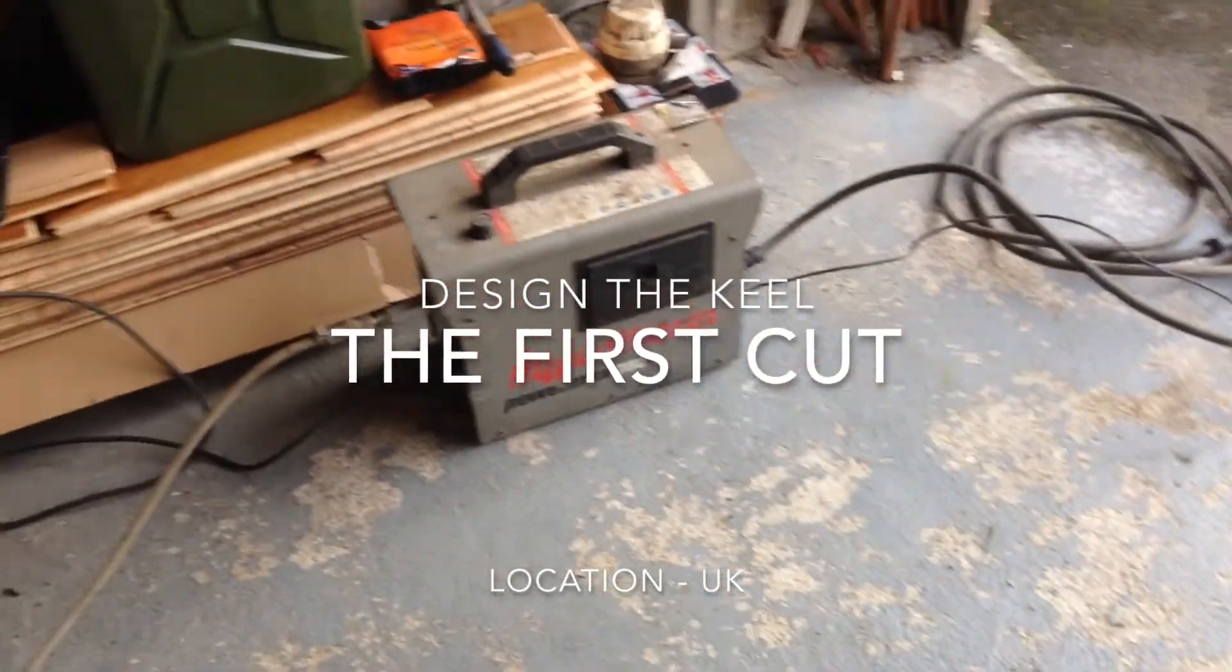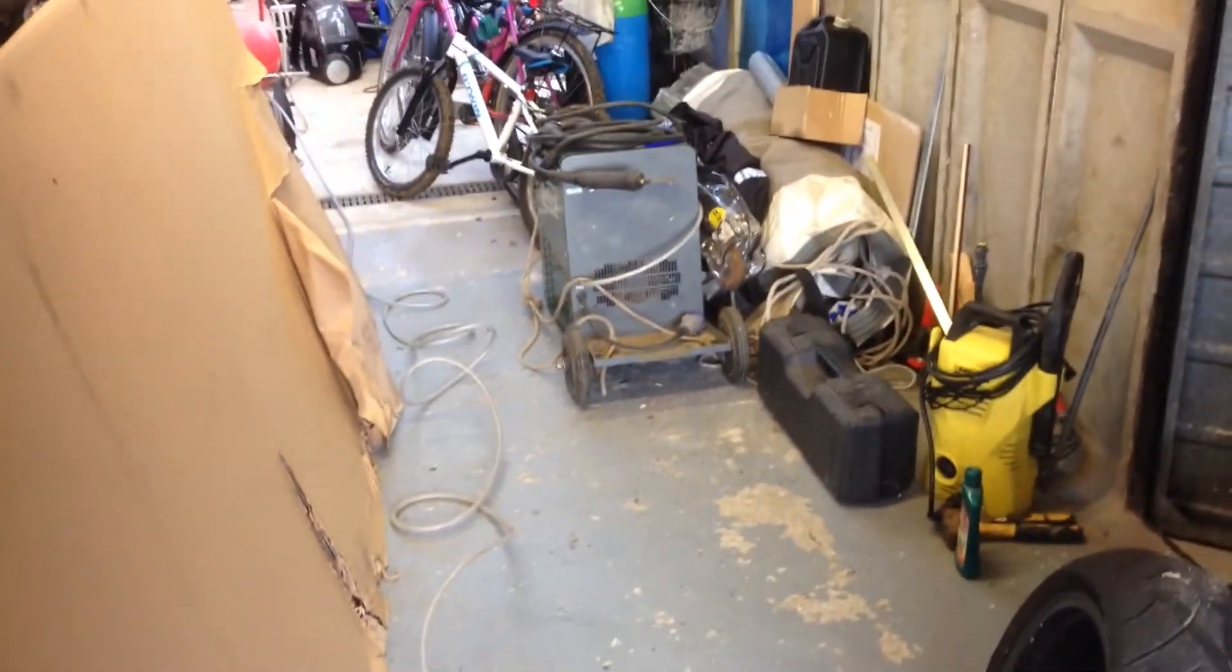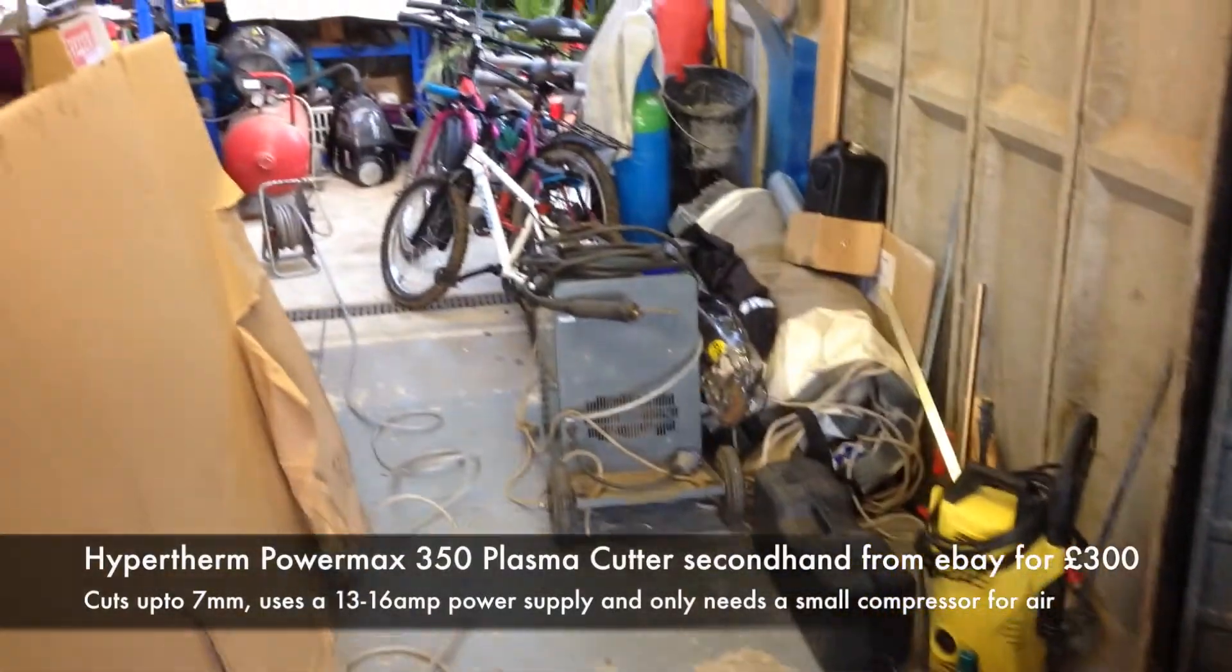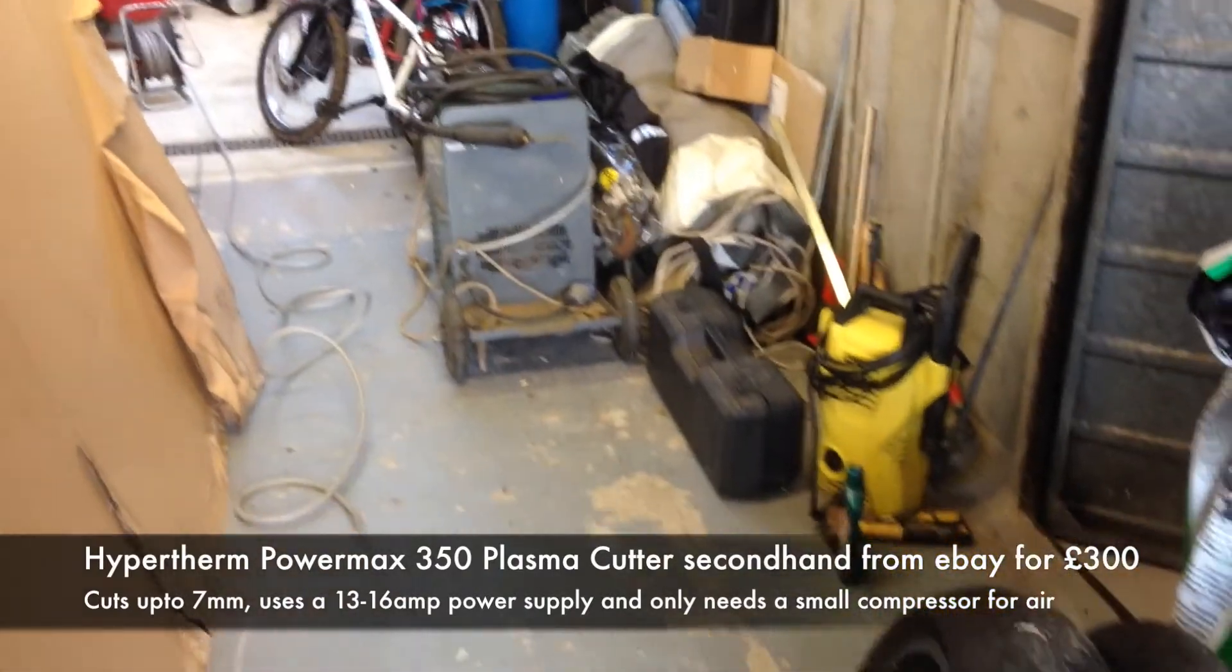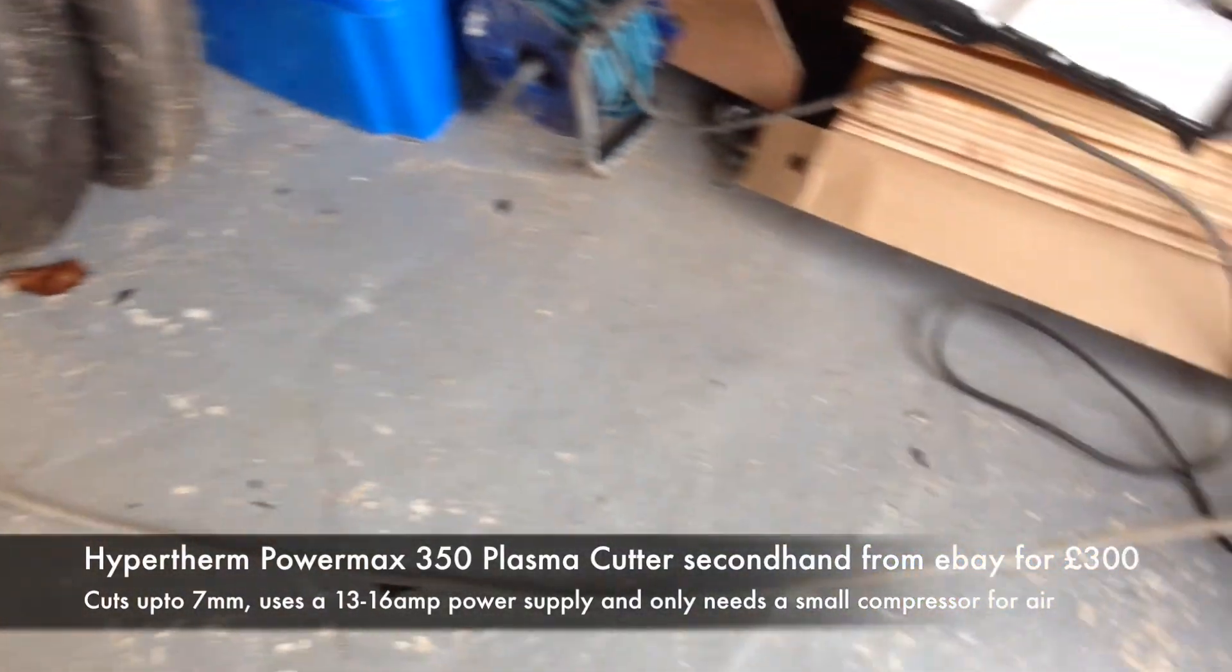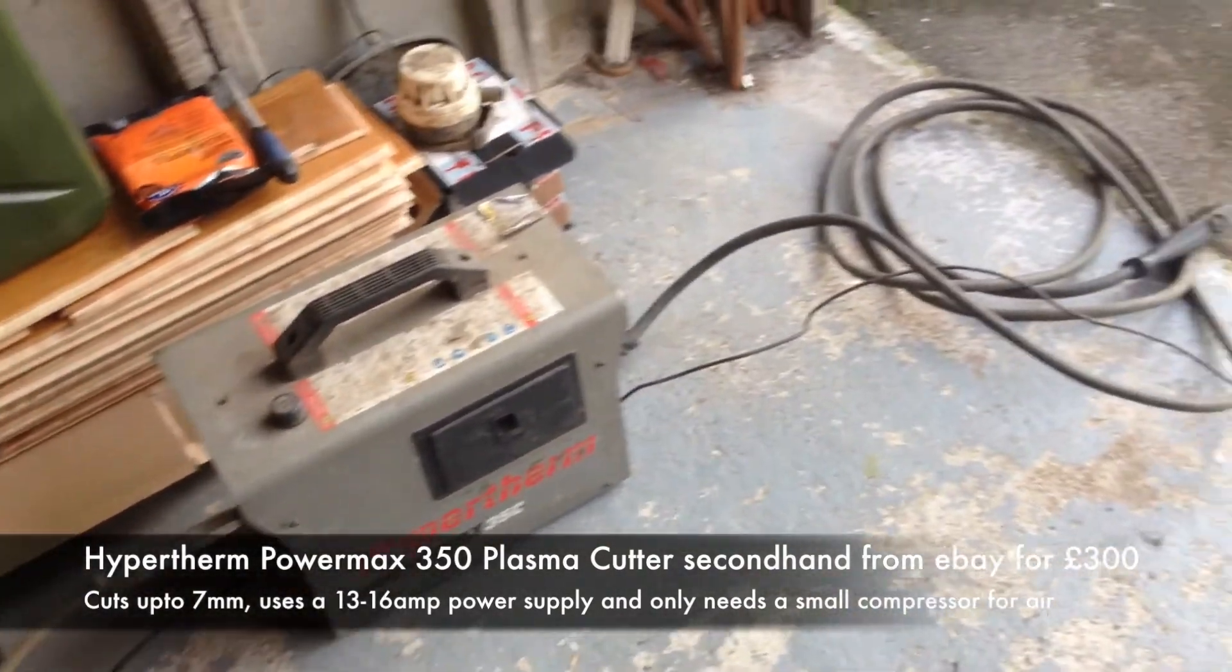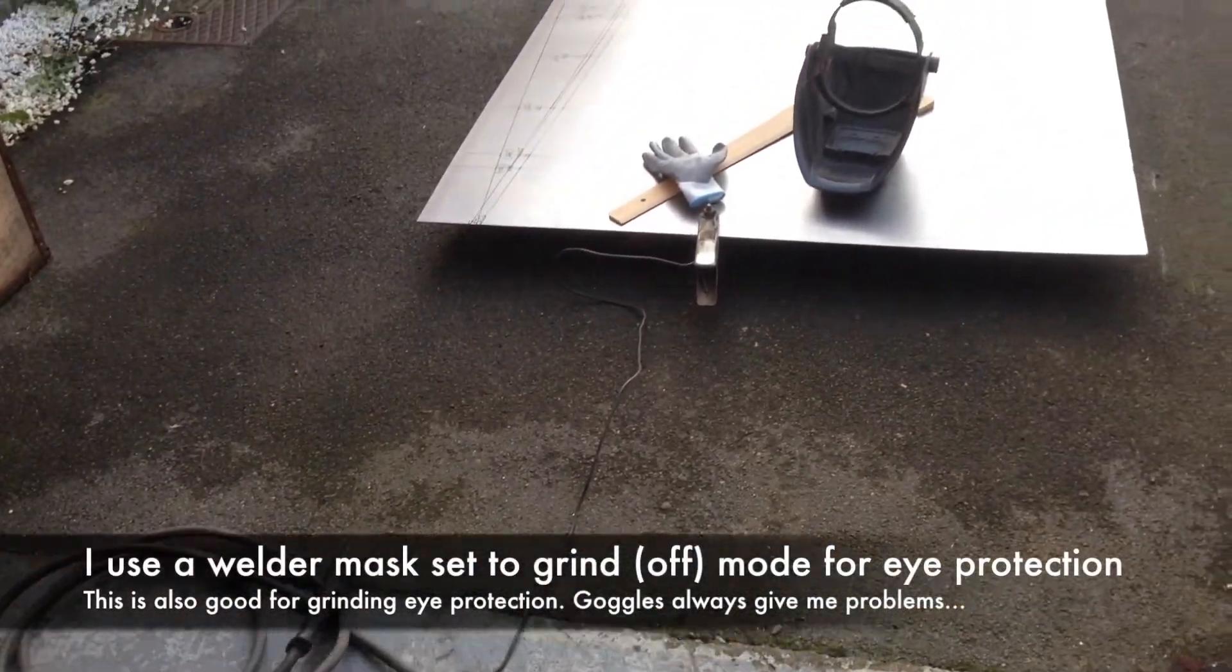So with the design finalized, it's come time to make the first cuts. This is my plasma cutter setup. There's a big compressor up there feeding compressed air down through the tube into this little plasma cutter. This is so much better and easier to use than oxyacetylene. It cuts up to about 7mm and it just uses that little torch there. You press the button and it cuts.